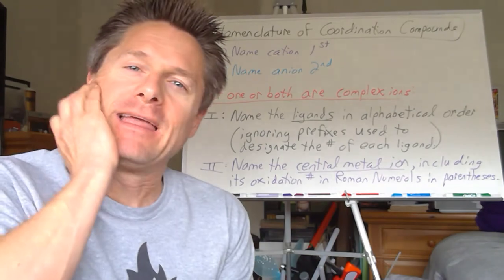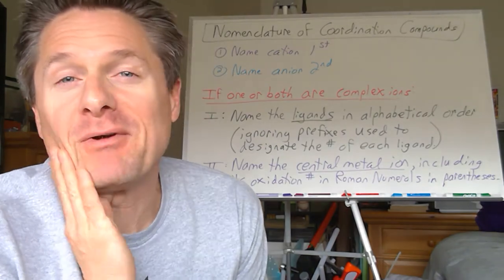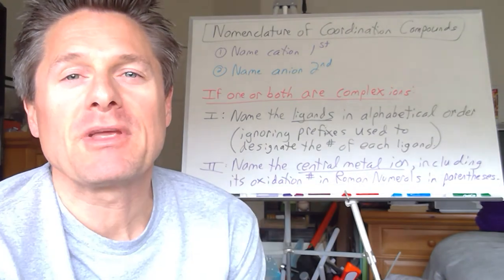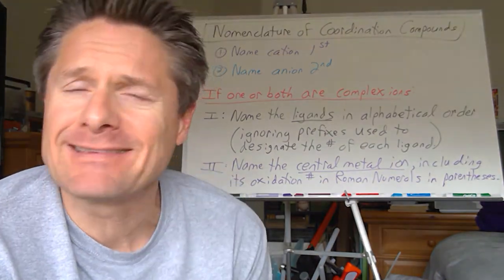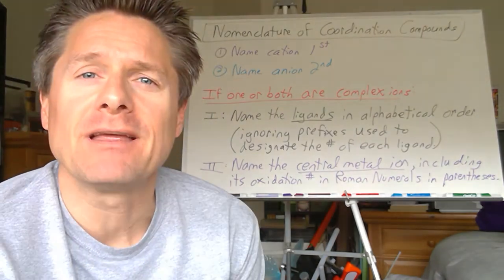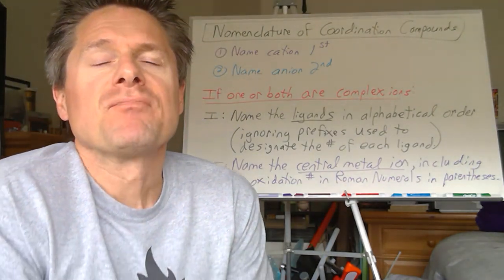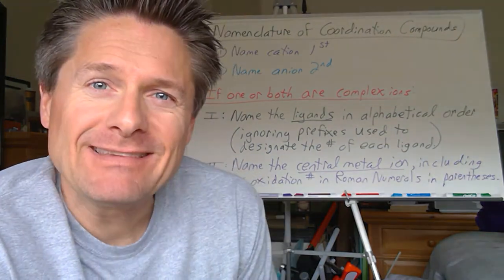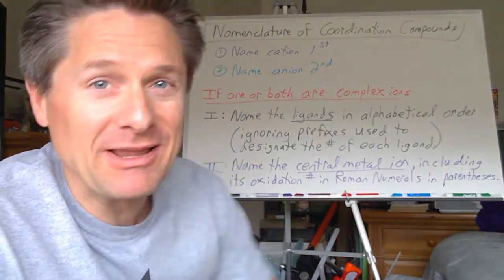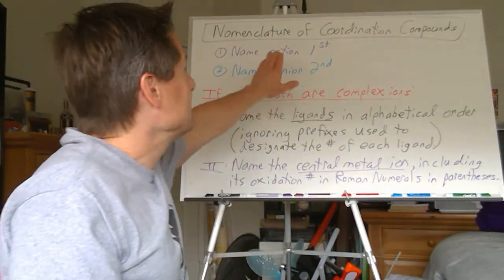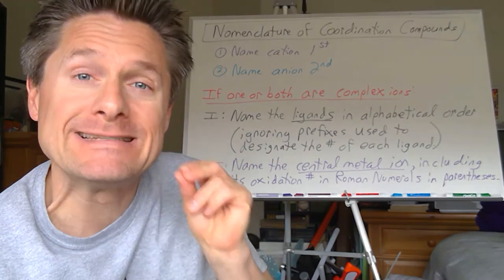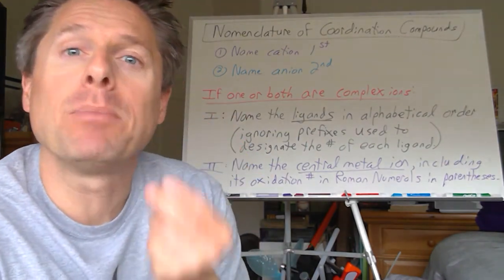This is going to be something you've never seen before. We did nomenclature last semester in first semester general chemistry, and we learned how to name the different types of acids and type 1 and type 2 ionic compounds and covalent compounds. This has some parallels, but mostly not. The only thing that really follows is if we have a coordination compound — remember, a coordination compound contains a complex ion.